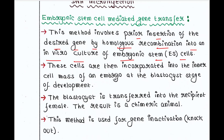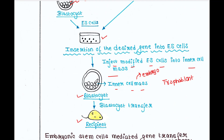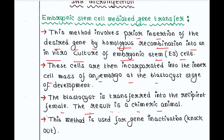These embryonic stem cells are incorporated into the inner cell mass of the embryo at the blastocyst stage of development, and the blastocyst is transferred into the recipient female. The result is a chimeric animal, because not all cells in the inner cell mass contain the modified embryonic stem cells — some are without the foreign gene as well. So this blastocyst contains mixed cells: some with the foreign DNA and some without. That is called chimeric. This method is used for gene inactivation; the process is called knockout.